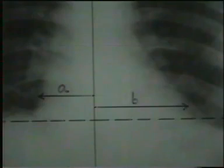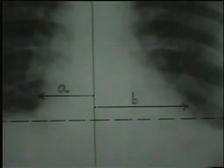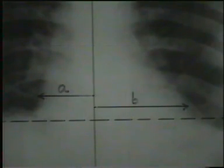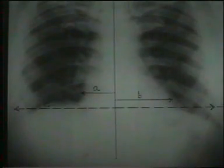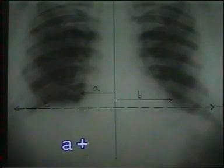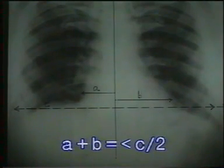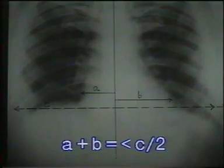To measure the cardiothoracic ratio, draw a vertical line through the center of the spine. Draw lines A and B perpendicular from this line to the maximum widths of the right and left heart borders. A plus B gives the maximum transverse diameter of the heart. It should be less than half of the maximum transverse diameter of the chest, that is C, the transverse line joining the inner borders of the ribs at the widest portion of the chest. We will study the details of the heart shadow in a later section.